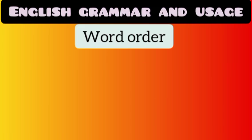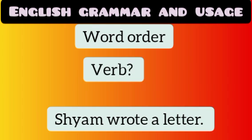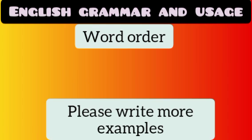Number one: the subject of a sentence usually comes before the verb. For example, 'Shyam wrote a letter.' The verb in the sentence is 'wrote,' and the word that comes before the verb is 'Shyam' — that is the subject. So you can write more similar examples like this.